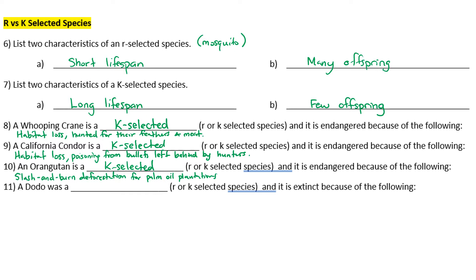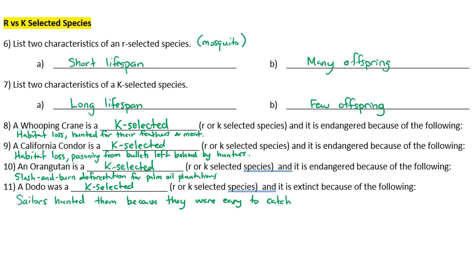Number eleven: a dodo is a K-selected species and it is extinct because sailors hunted them because they were easy to catch, being large and flightless. Accounts suggest that the dodo only had one egg per clutch. For K-selected example species, think big mammals like the elephant.